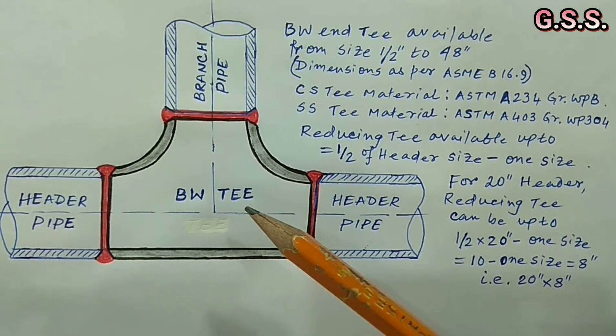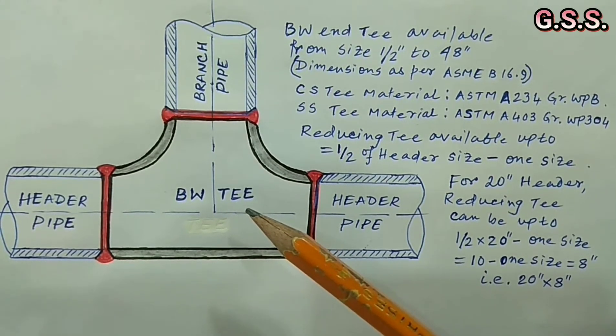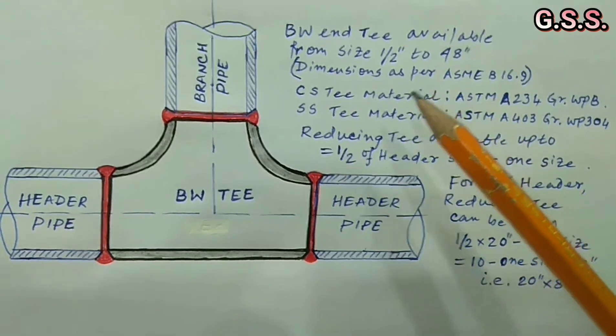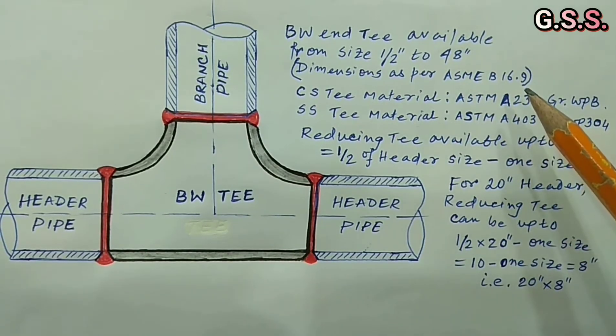T is a factory-made butt-welded end rod fitting available from half inch to 48 inch size having dimensions as per ASME B16.9.